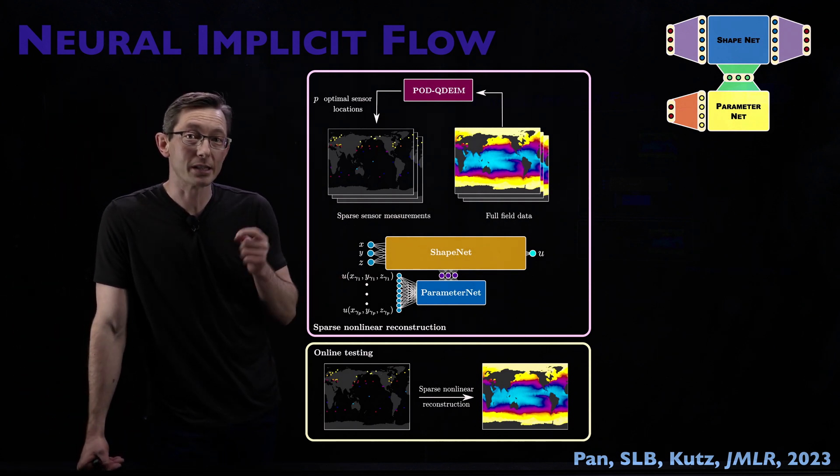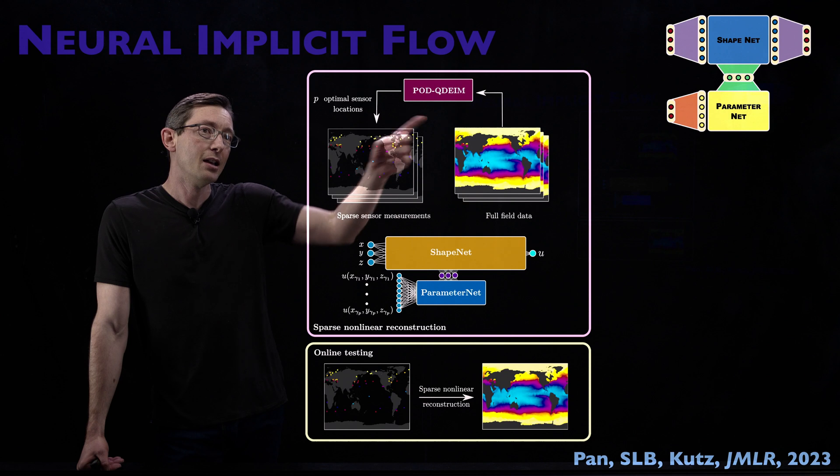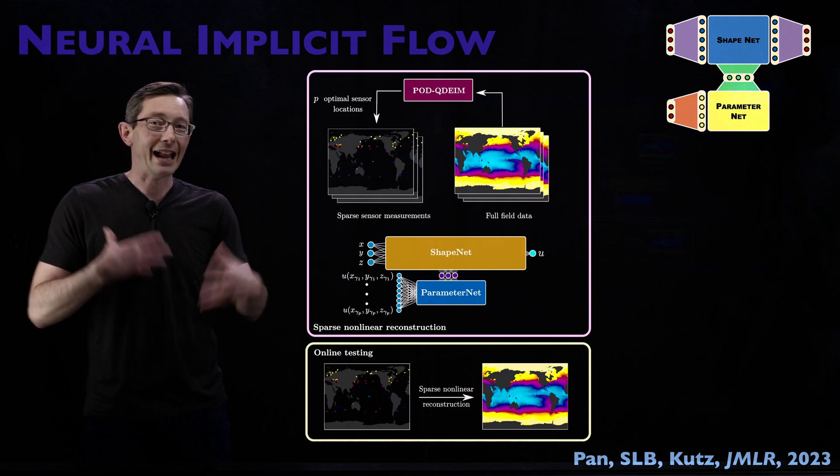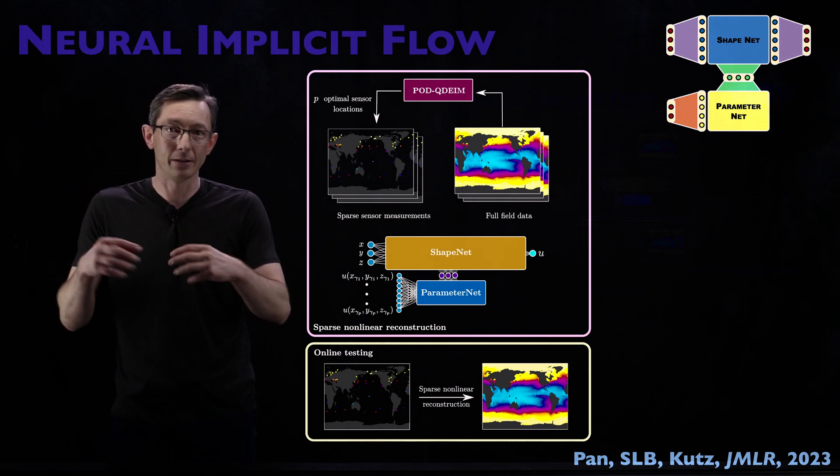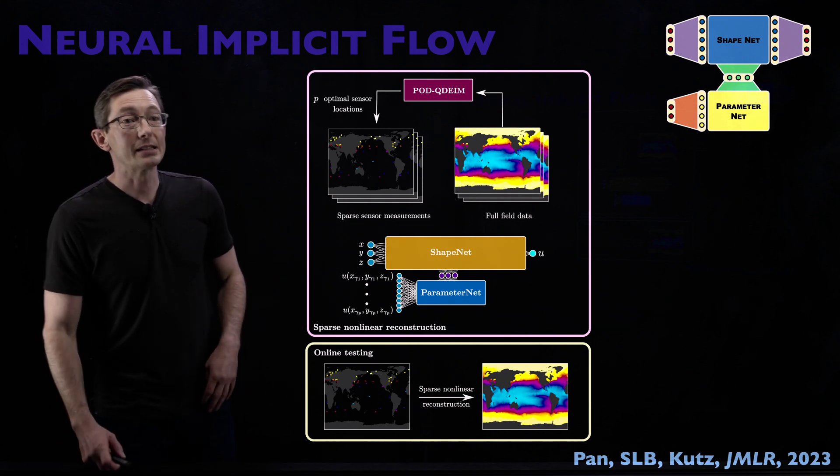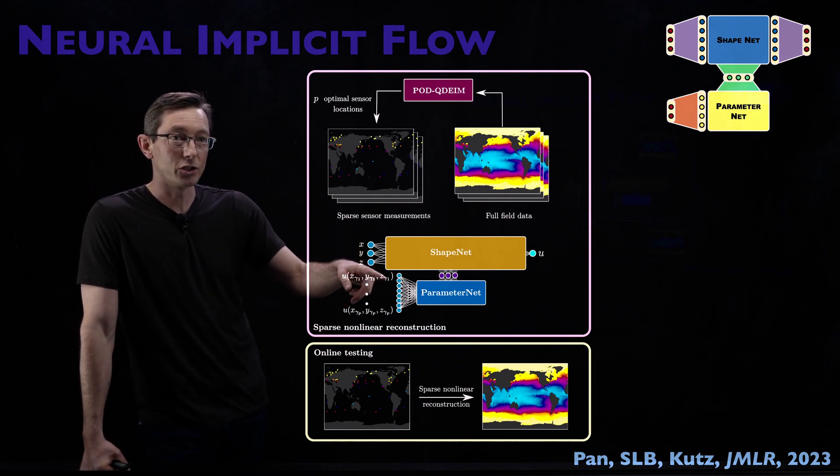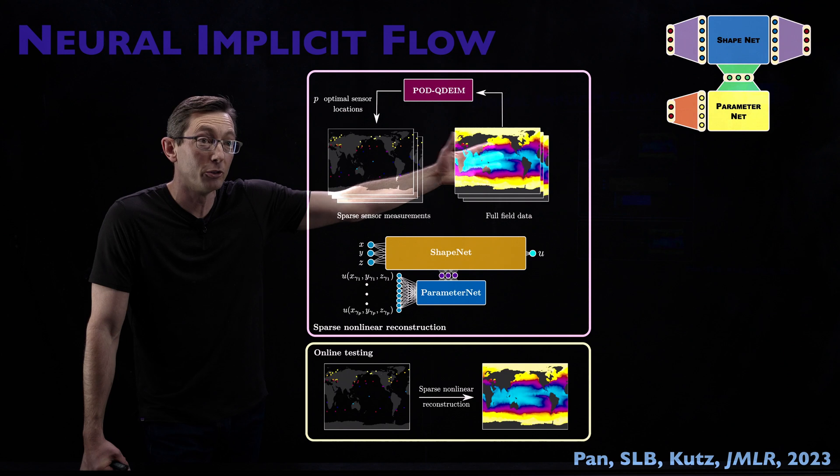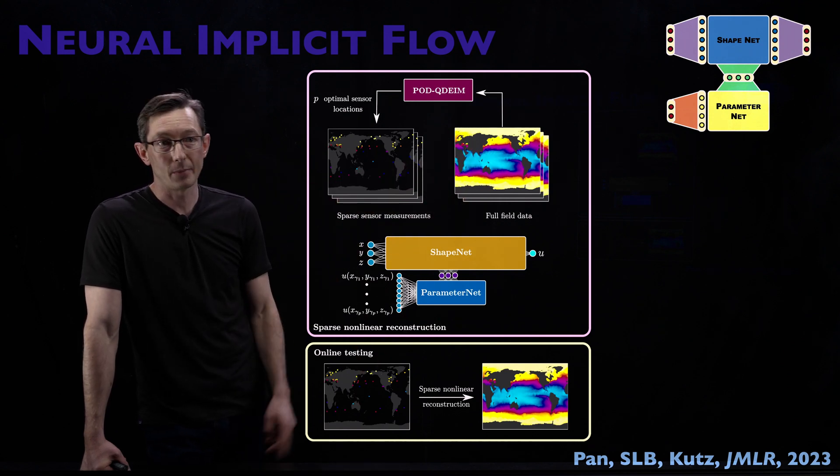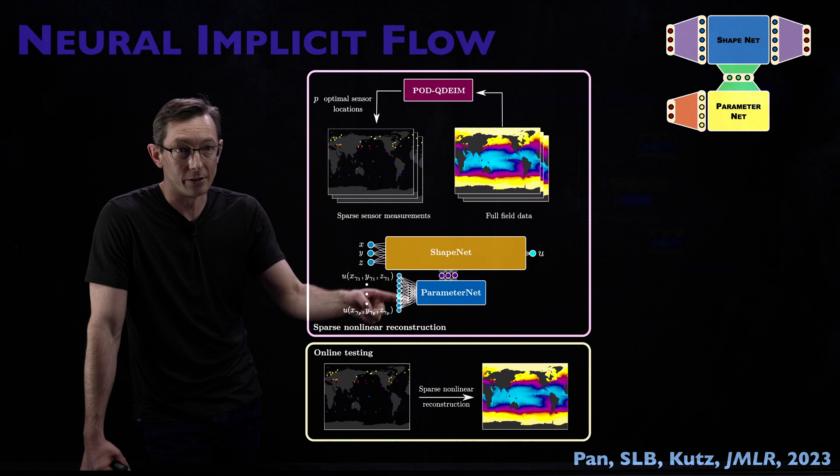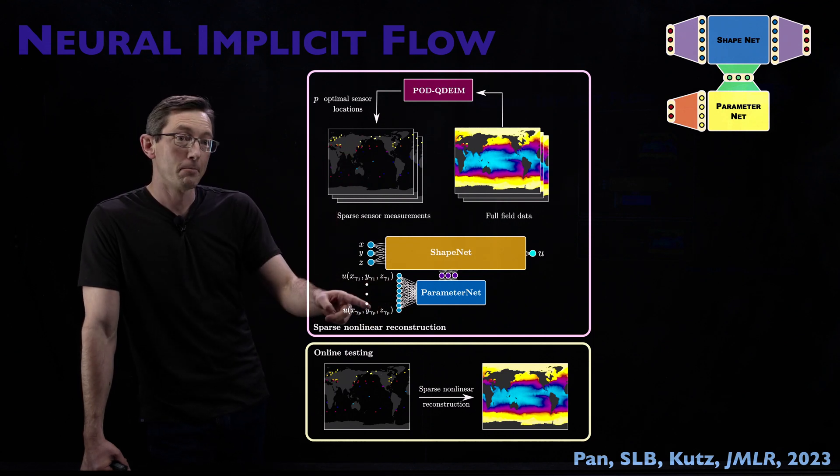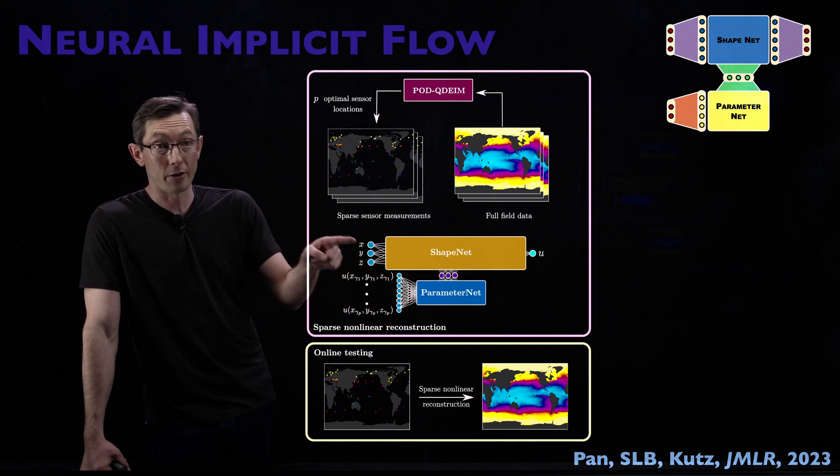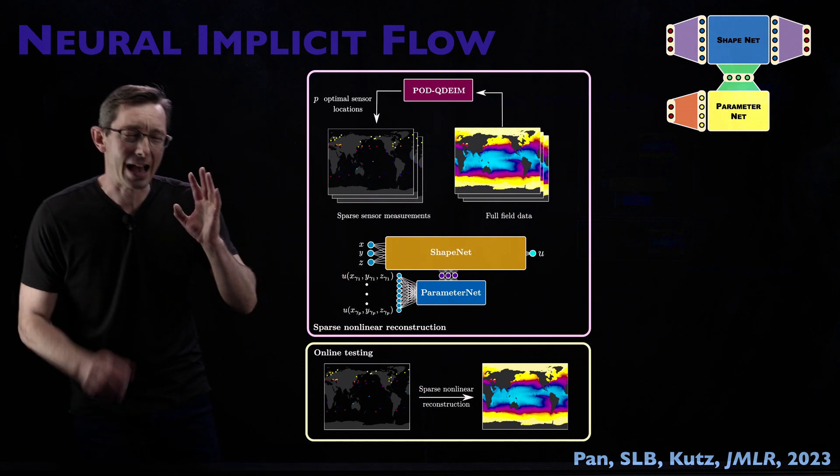Another example is you can combine this with sparse sensor placement techniques like QDEIM. So we've talked about sparse sensor placement before where you have some high dimensional system, it has patterns, patterns, and so you want to put targeted sensors down to maximally estimate those patterns. Similarly, you can use that idea here in the Shape Net to essentially use optimal sensor locations to estimate full flow field data using these sparse measurements here. So if you have sparse measurements of a new flow field, you can use those sparse measurements to infer what all of the other measurements would be at all other points x, y, and z.